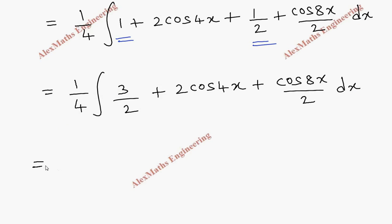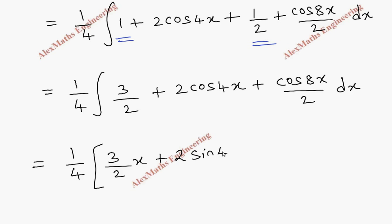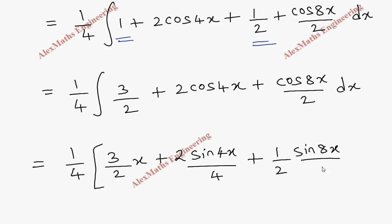We are going to integrate each term. The first term gives 3/2 · x. The next is 2sin4x / 4. There is already a factor of one half, and its integration is sin8x / 8. Then we have plus C.